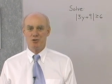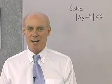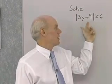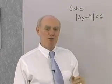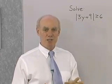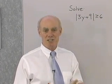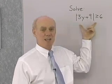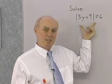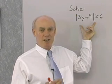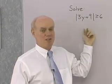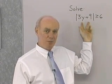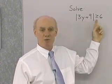We want to turn our attention now to linear inequalities that involve absolute value. The first problem is the absolute value of 3y plus 9 greater than or equal to 6. We're going to use the definition of absolute value to reason through the solution. The absolute value of 3y plus 9 means the distance between 3y plus 9 and 0 on the number line, so that distance must be greater than or equal to 6 units.